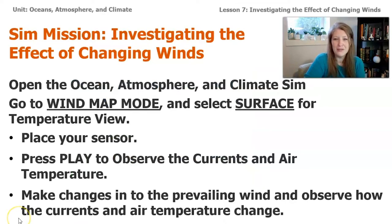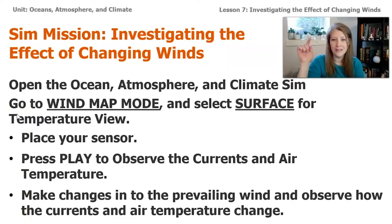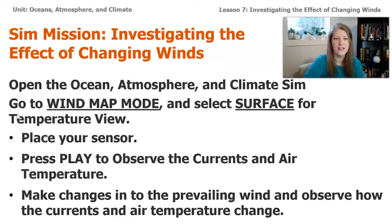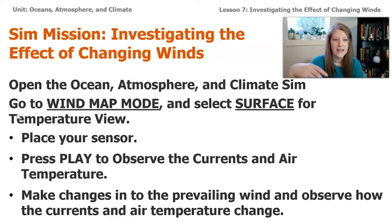Here's what we're going to do: open the Oceans, Atmosphere, and Climate Amplify Science sim and click on Wind Map Mode from the menu, then select Surface for the Temperature View. Place your sensors — one in a warm current location, one in a cold ocean current location — then press Play and observe the currents and air temperature. Once the air temperature has stabilized, make changes to the prevailing wind and see how that affects the currents and air temperature, then record that data and try other different changes.